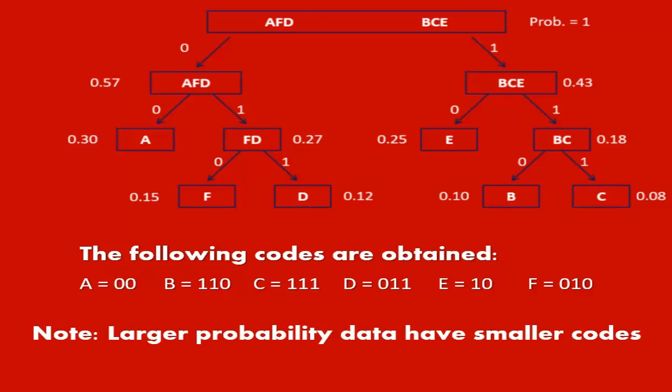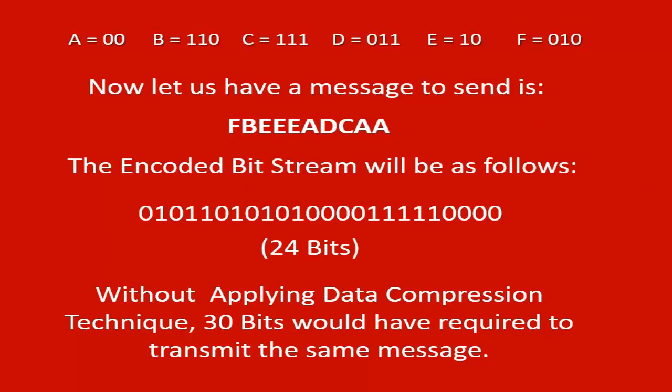Note, larger probability data have smaller codes. Now we have obtained the codes for all source data. Consider the message F, B, E, E, E, A, D, C, A, A. After assigning the given codes, we get the binary stream as shown. Please see, the total number of bits required to encode this message is 24.